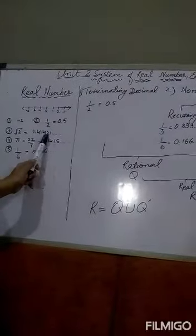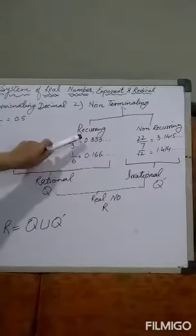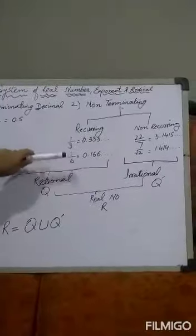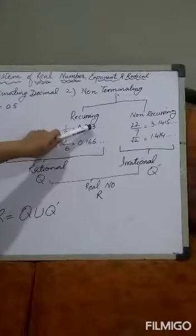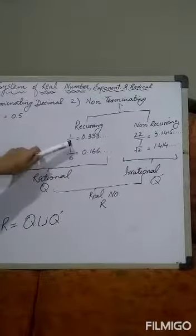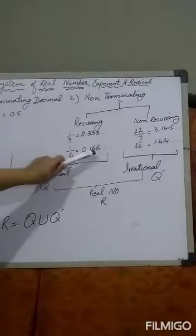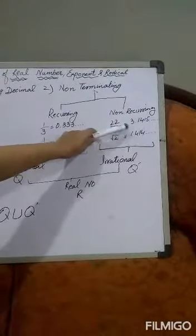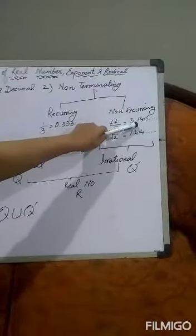Root 2 equals 1.414... — also a non-terminating decimal. Non-terminating decimals can be divided into two parts: recurring, where the same digits repeat in the decimal part, and non-recurring, where the decimal digits are not the same and do not repeat.